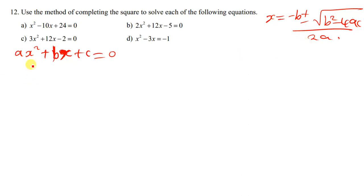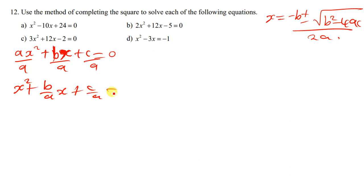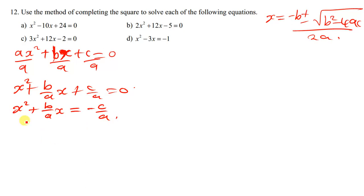The first thing you do is divide everything by a. When you divide by a, the solution will be x squared plus b over a times x plus c over a is equal to zero. You then take c over a to the other side of the equal sign, remaining with x squared plus b over a times x is equal to negative c over a.